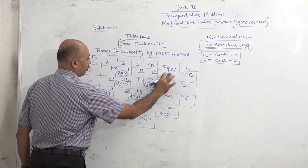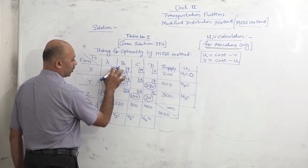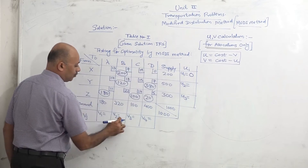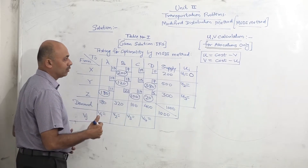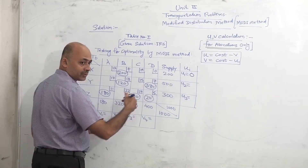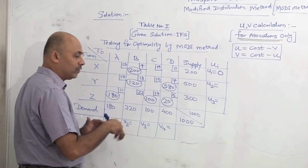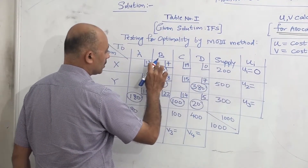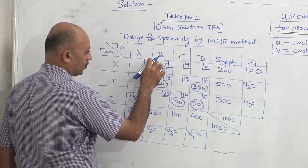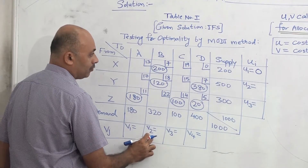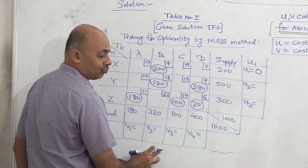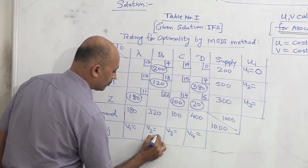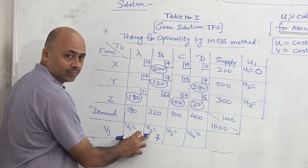We always assume U1 as 0 and then we start. See where the allocation in the first row is — it is 200. U and V is an alternate calculation: you get one U value, then you get a V value, then again a U value. So with U1 equal to 0, come to the allocation 200. From here we will get V2. V is equal to cost minus U. Cost is 7, U is 0, so 7 minus 0 gives V2 equal to 7.